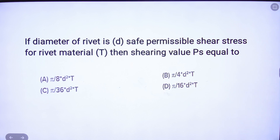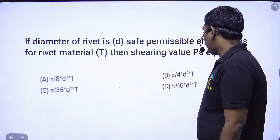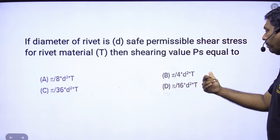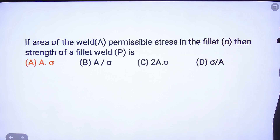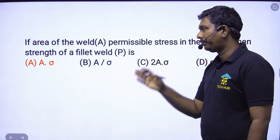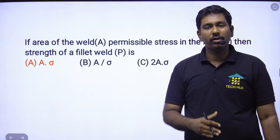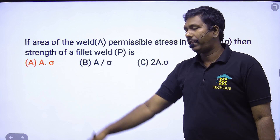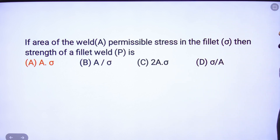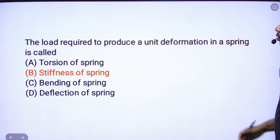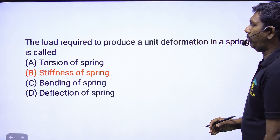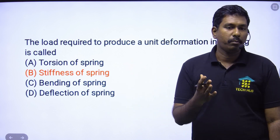If the diameter of a rivet is D, you will find the answer: option B is π/4 × D² × T — option B is the answer. If the area of the weld has permissible stress in the fillet sigma, then the strength of the fillet weld is A × sigma — option A is the answer. What is the load required to produce a unit deformation? Spring stiffness — option B, direct statement, option B.